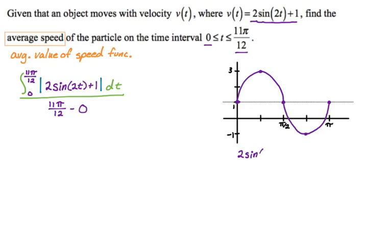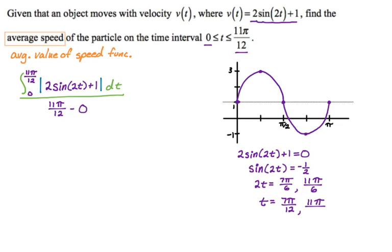I'm going to set velocity equal to 0 and solve. Subtracting and dividing gives me that sine(2t) = -1/2. So 2t could be either 7π/6 or 11π/6, because those are the places where sine equals negative one-half. So t = 7π/12 or t = 11π/12. Between 7π/12 and 11π/12 the velocity is negative, which means displacement on that interval would be negative, so to find distance I'll take the negative of that integral value.